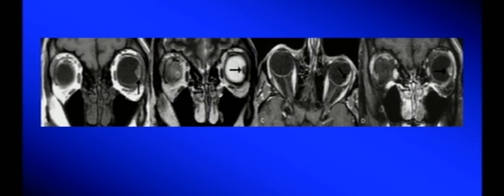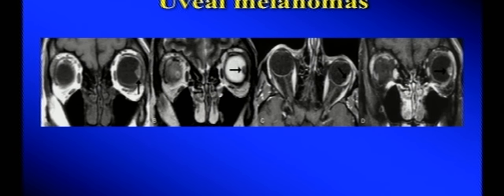Another example: an intraocular hyperintense mass on T1, hypointense on T2. With contrast and fat suppression, the muscle is hyperintense and fat is gone, but this mass takes up only a little contrast and remains relatively hypointense. With these characteristics — intraocular, T1 hyperintense, T2 hypointense — this is choroidal melanoma. Of course, for visible intraocular lesions you would not routinely order MRI; ultrasonography — which Dr. Deepak Bhat will discuss — is a much better first option.